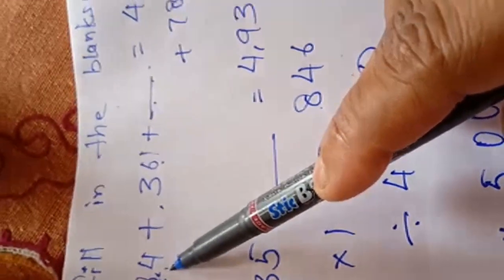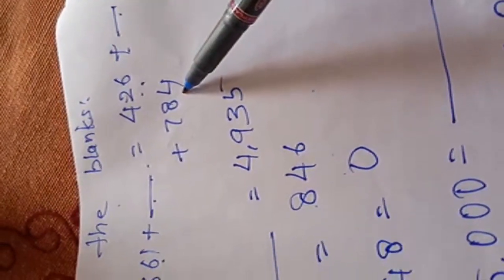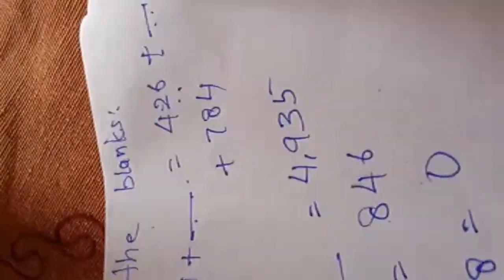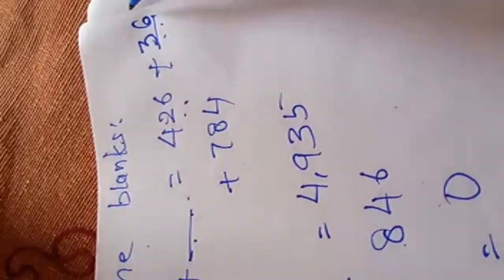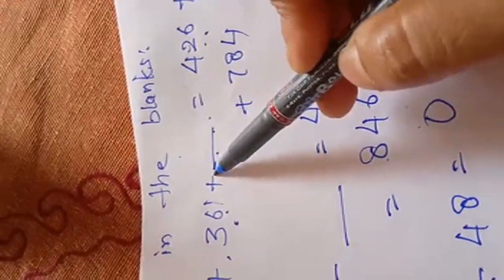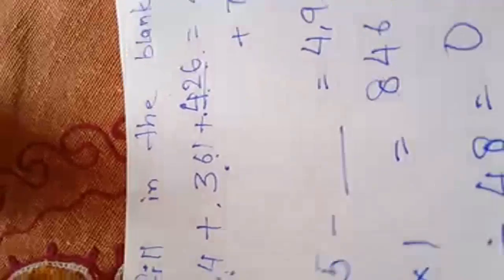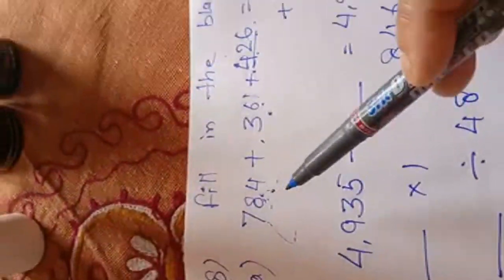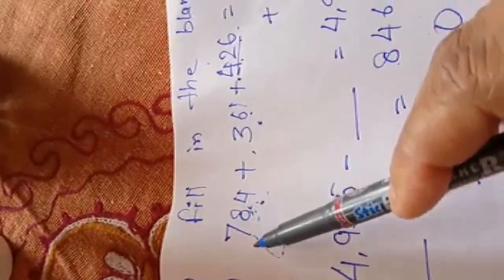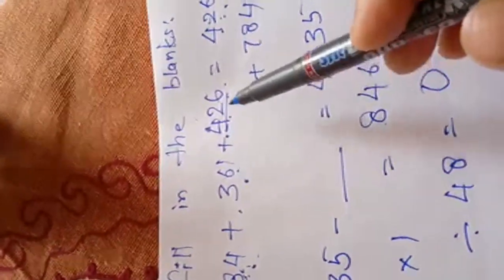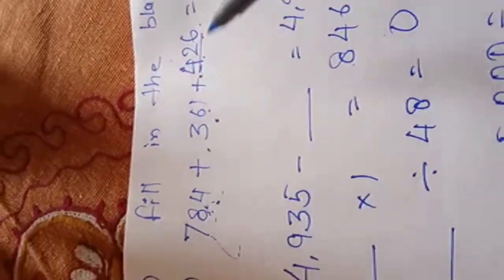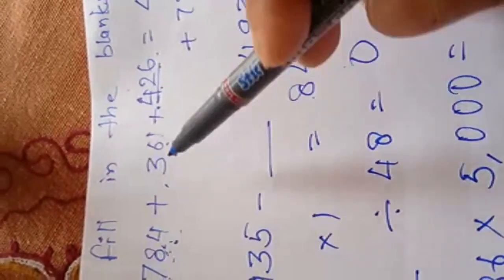784 on the left side, right side 784 is there. 361 on the left side. Here, 361 is not there. So, I will write 361 here. On the left side, it is vacant place. On the right side, it is 426. So, on the left side, I will write 426. Let us see: 784 plus 361 plus 426. Here, 426 plus 361 plus 784. The addends are same, only orders are changed.